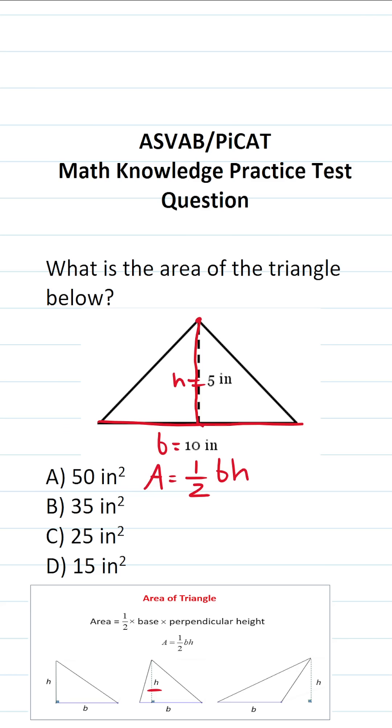So with those values identified, let's just go ahead and plug them in and solve accordingly. This becomes one-half times 10 times 5. What is one-half of 10? One-half of 10 is 5, so this becomes 5 times 5. 5 times 5 is 25, so the area of this triangle is 25 square inches.